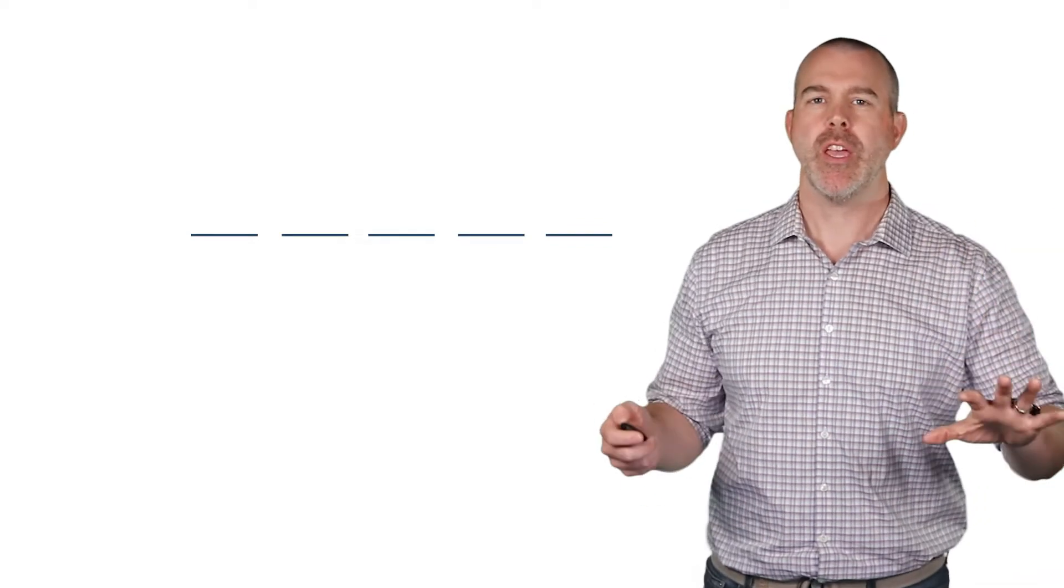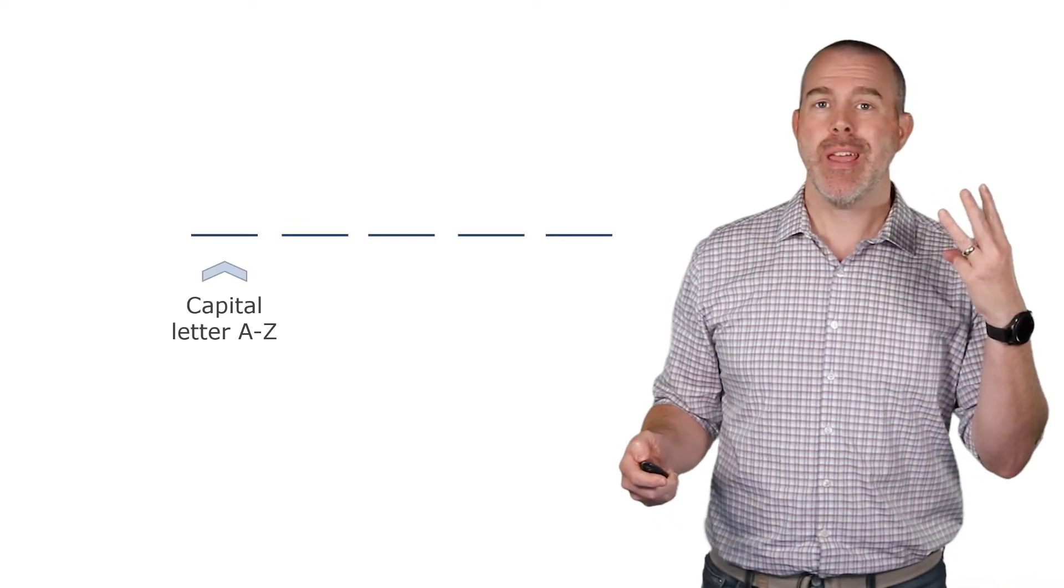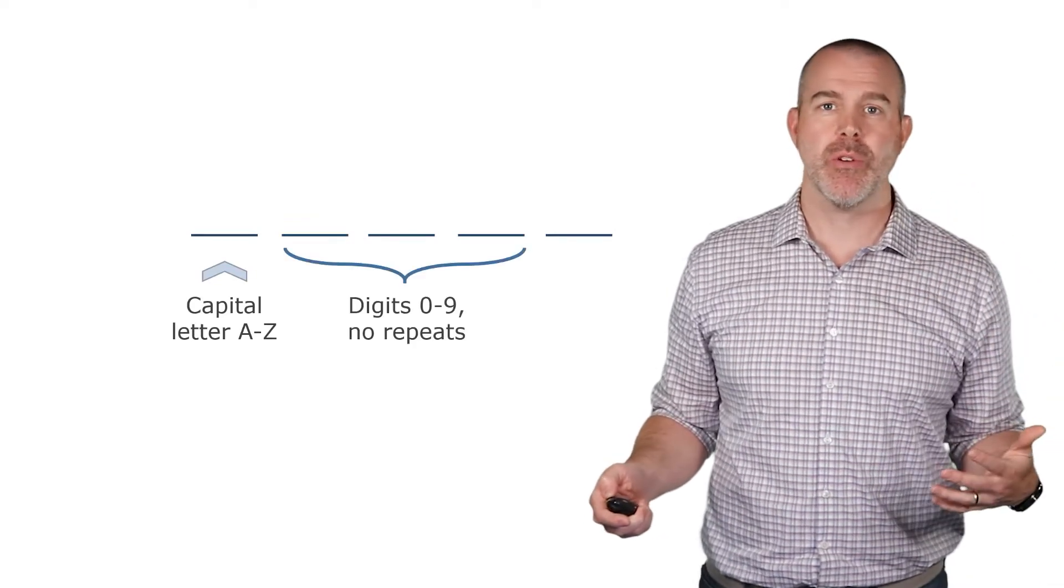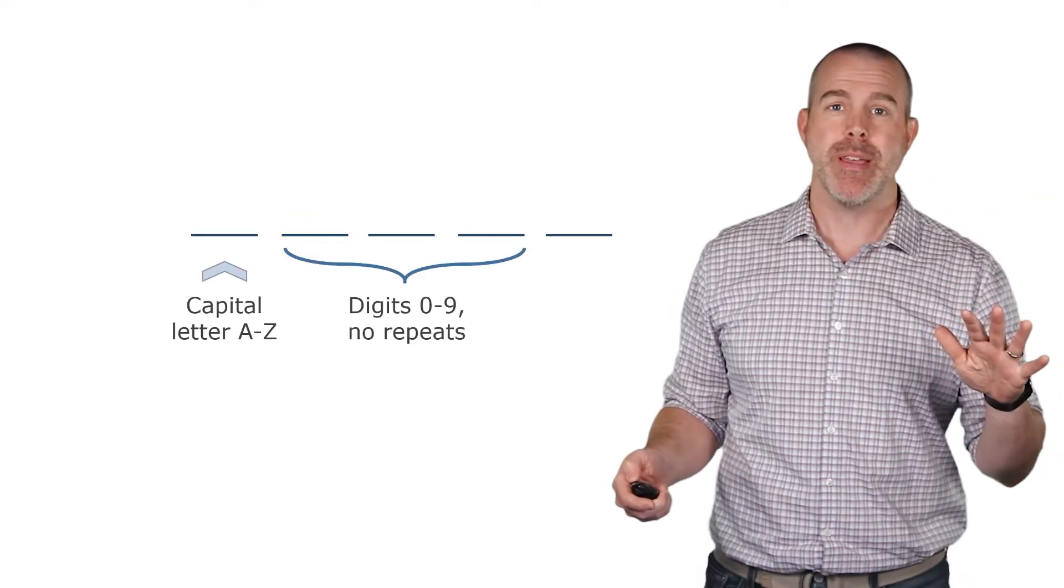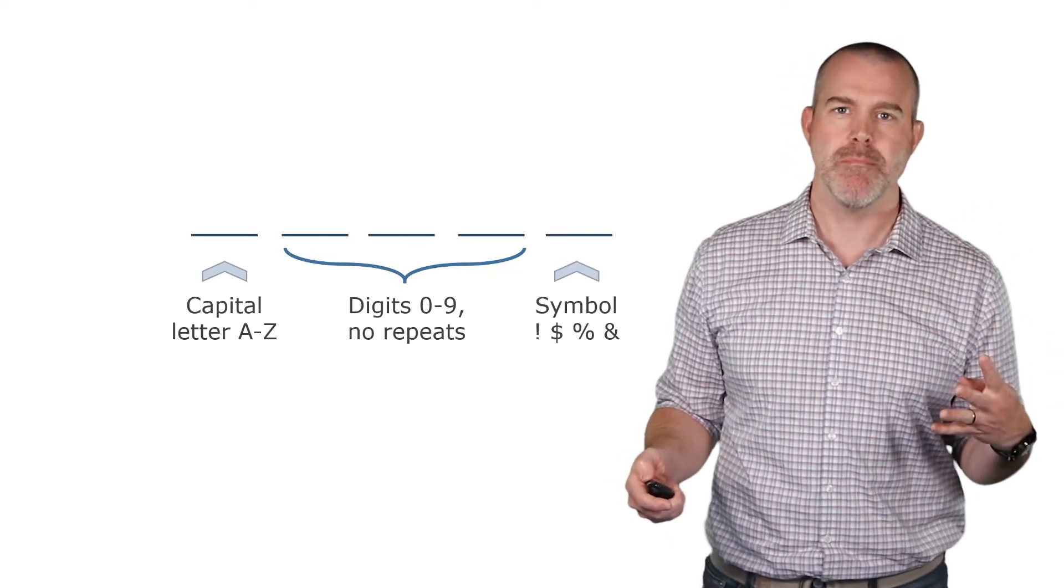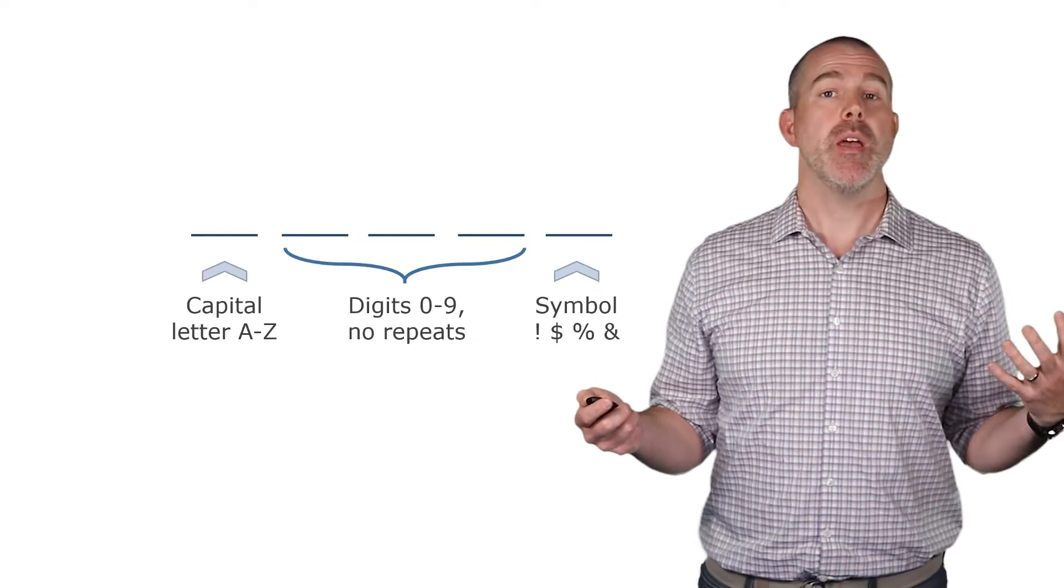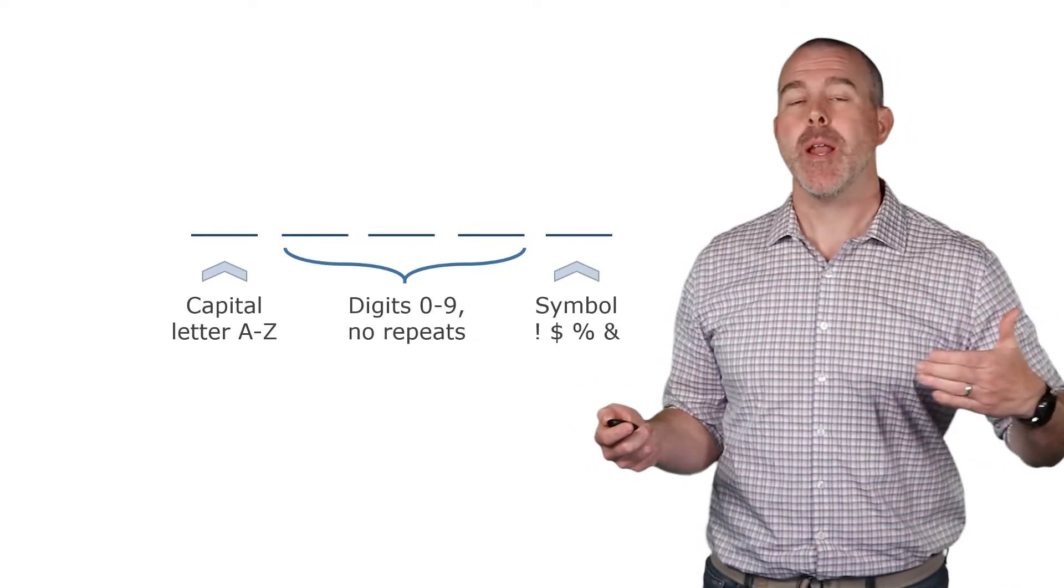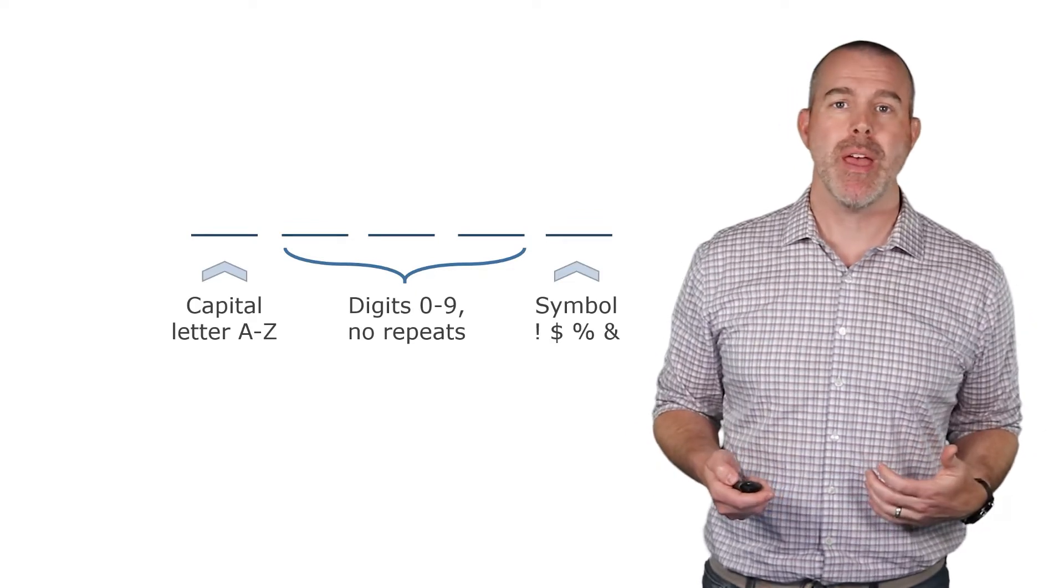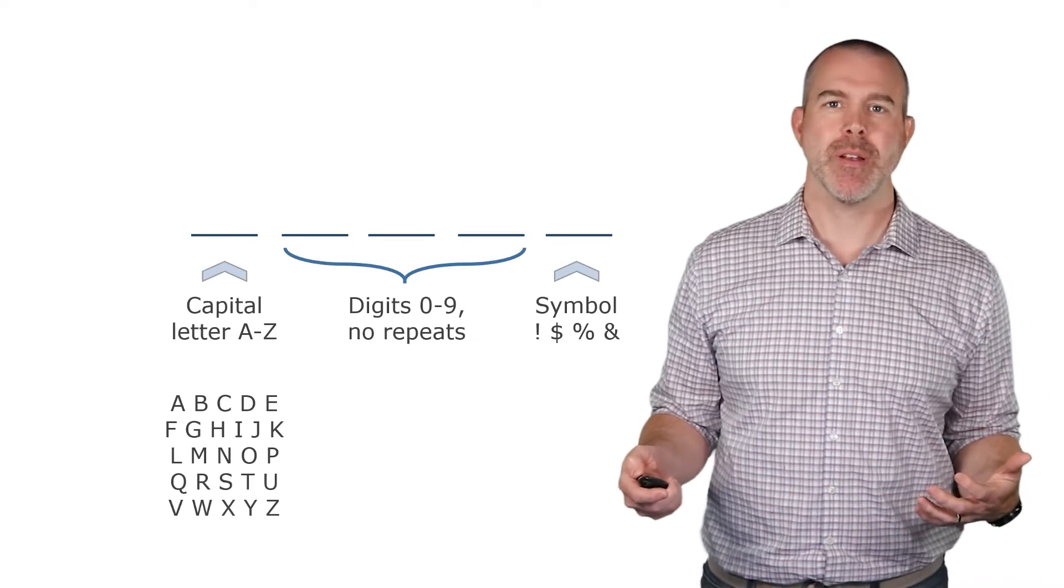Let's suppose we're trying to write a password. It has five characters in it. We have some rules. These are kind of funky rules that the first has to be a capital letter. The second three have to all be digits zero through nine, but we can't have any repeats. And then the last one has to be some kind of symbols, say one of these four symbols. Question is, how many possible passwords are there? Well, what we're going to do is we're going to count the number of ways to do each step, and then we'll multiply them all together.